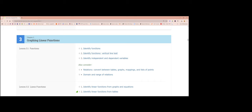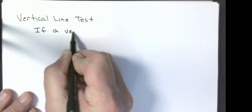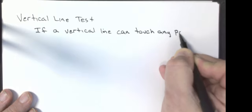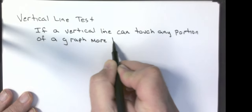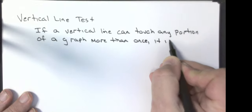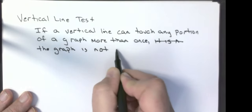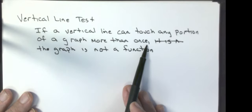The second IXL assignment is 'Identify Functions Using the Vertical Line Test.' The vertical line test states: if a vertical line can touch any portion of a graph more than once, the graph is not a function. Let me write that down — vertical line test: if a vertical line can touch any portion of a graph more than once, the graph is not a function.